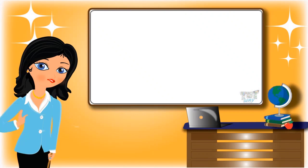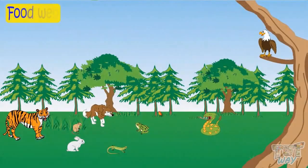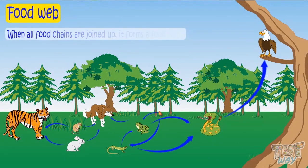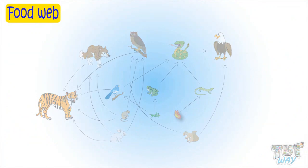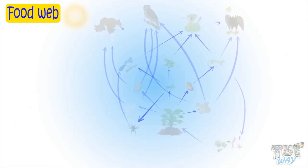Hi kids, today we will learn what is a food web and examples of food webs. There is not one but many food chains in a single habitat, and when all food chains are joined up, it forms a food web.